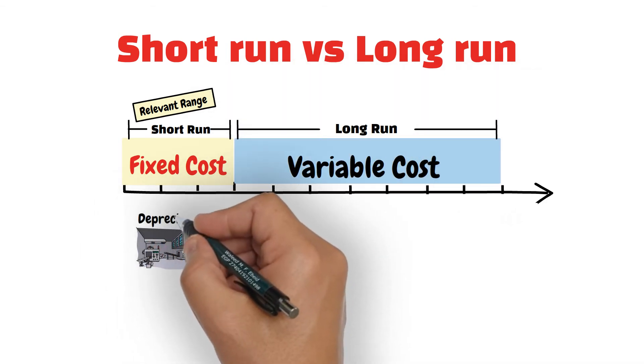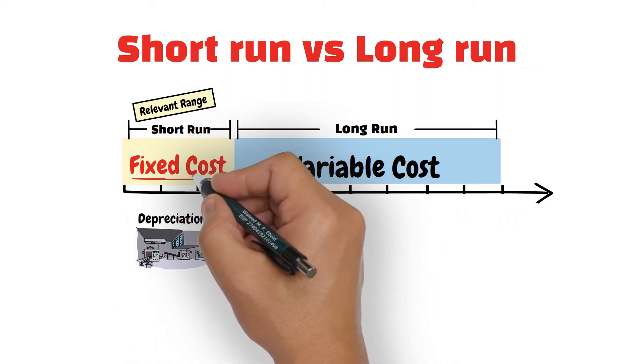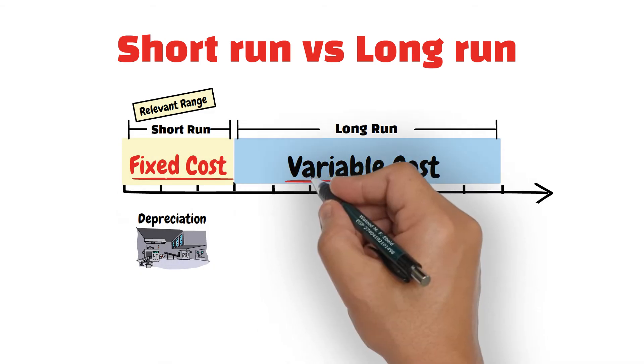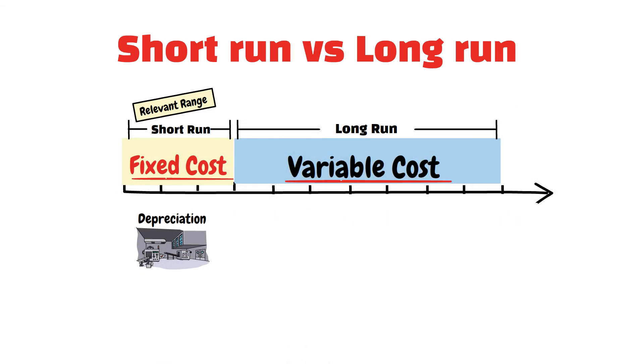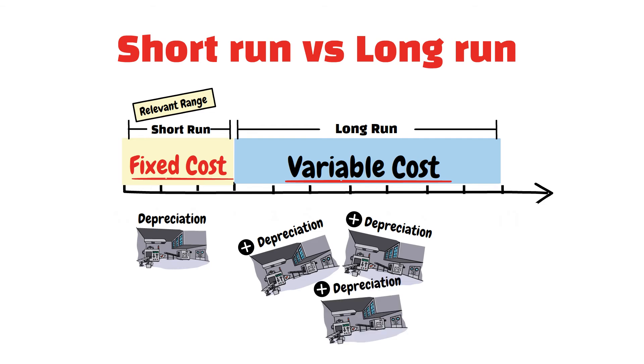The depreciation expense for a production facility is fixed during the current year but becomes variable over a period of five years as the company builds more production facilities to meet the expected increase in demand for its products.